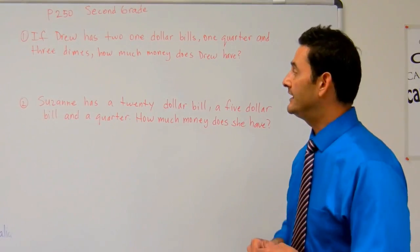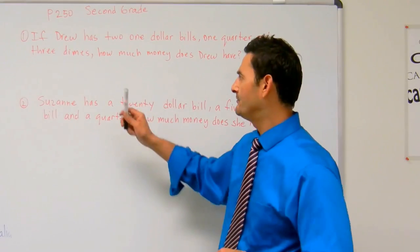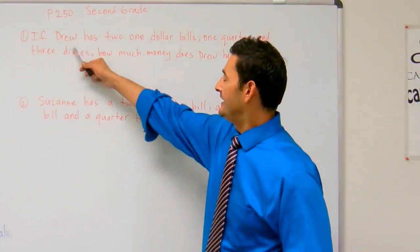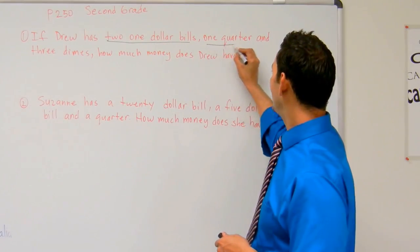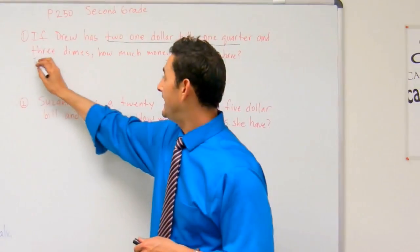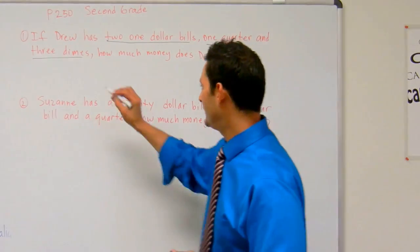Number one reads, if Drew has—and we always refer to the problem, go ahead and write on your book, it's fine with me, it's your book actually. If Drew has two one dollar bills, one quarter, and three dimes, how much money does Drew have? Okay, so let's figure this out.